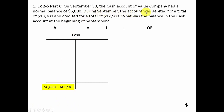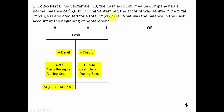During September, the account was debited for a total of thirteen thousand two hundred dollars — debits increase cash. These are cash receipts that increased the account by thirteen thousand two hundred dollars. The account was credited for a total of twelve thousand five hundred — credits decrease cash, representing cash disbursements. Overall the account went up by seven hundred dollars during the month.